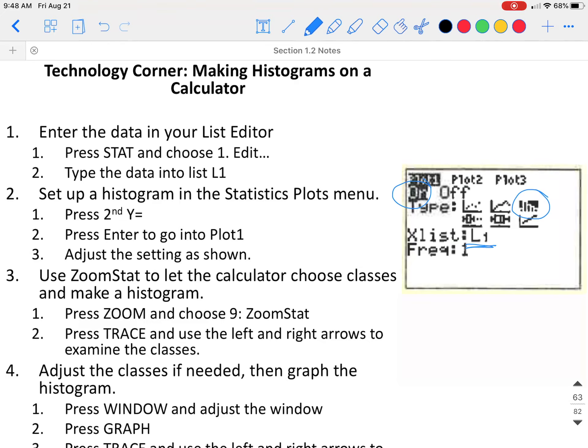Then you will go over and select the histogram. You want to make sure that since you put your values into list one, your X list is on list one. Then you can hit zoom stat to make the window fit your graph better. To do this, you would hit the zoom button at the top. You would choose option nine, which is zoom stat. And you should get your graph.